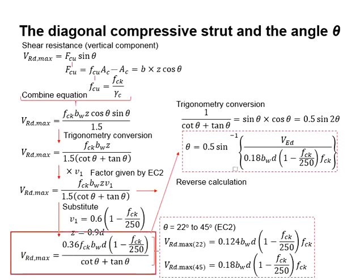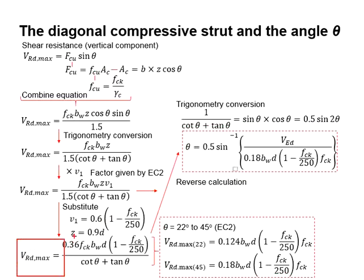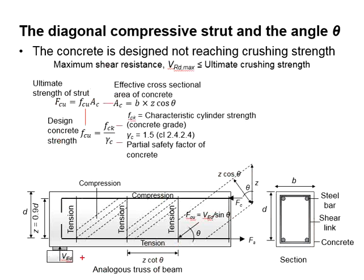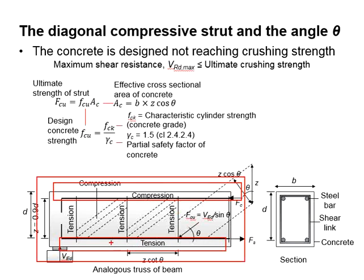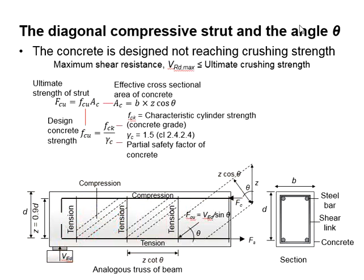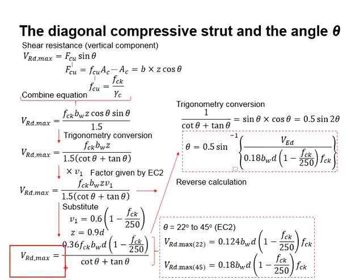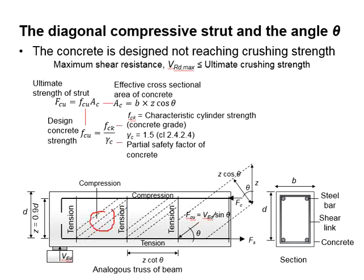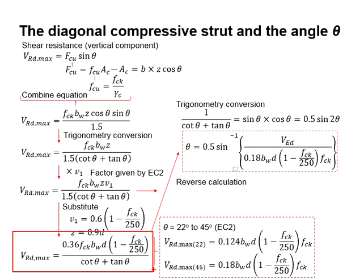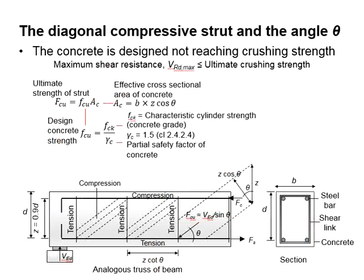Now let us talk about VRD Max. VRD Max is derived on the basis of the analogous truss of a beam, which assumes a beam is in the form of a truss. You have tension members, compression members, tension regions taken by the shear reinforcement, and compression members representing the diagonal thrust — we call this region the strut. VRD Max is derived on the basis of the maximum compressive strength of this diagonal strut, representing the largest resistance that can be given by the beam when subjected to load.